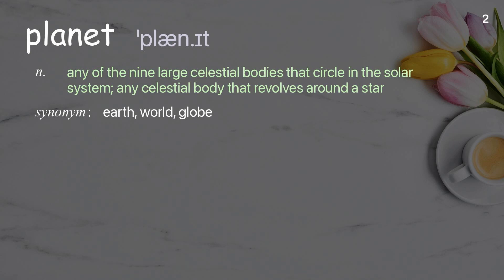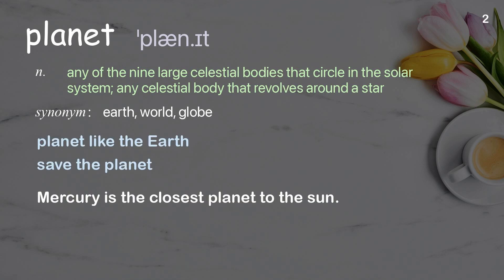The bonobo sanctuary is dedicated to protecting and rehabilitating these endangered primates. Planet: any of the nine large celestial bodies that circle in the solar system; any celestial body that revolves around a star. Examples: planet like the earth, save the planet. Mercury is the closest planet to the sun.